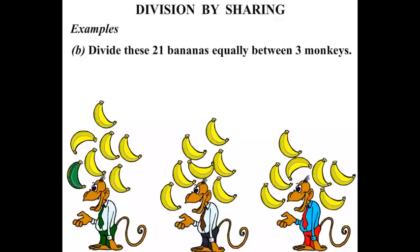1, 2, 3, 4, 5, 6, 7. The first monkey gets 7 bananas. 1, 2, 3, 4, 5, 6, 7. The second monkey also gets 7 bananas.